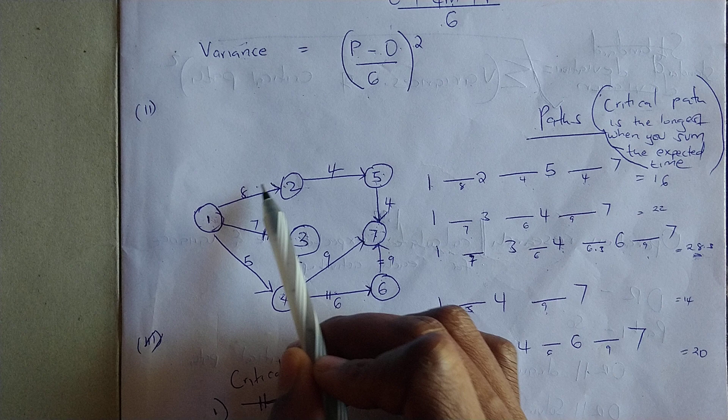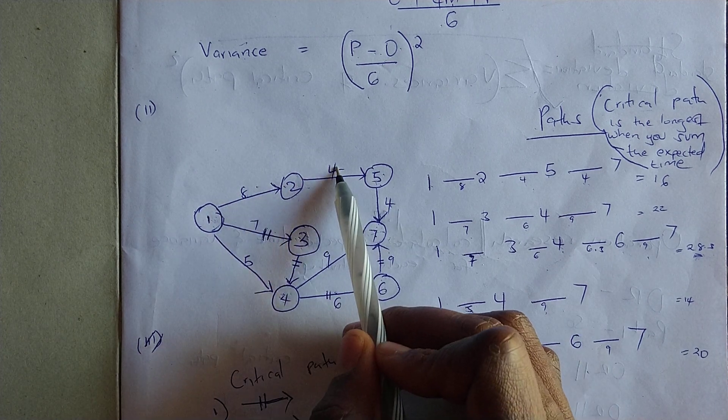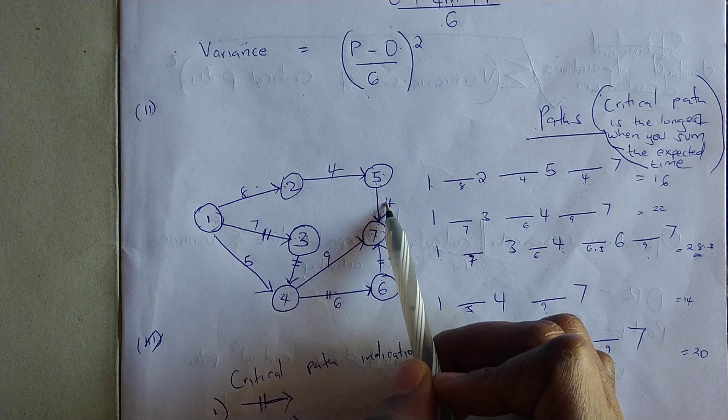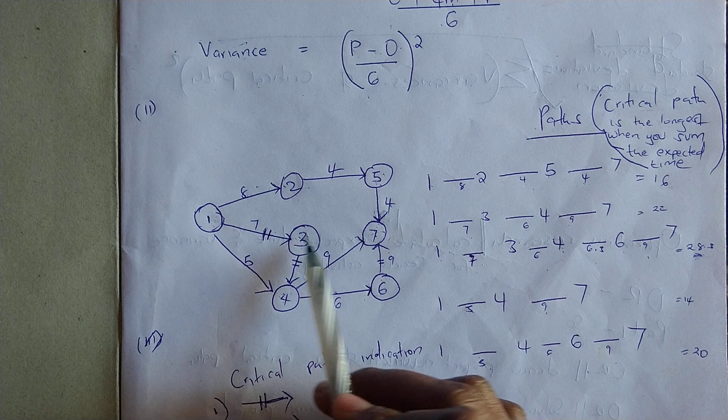How do you sum it? We'll use the expected time. For example, this path: one plus eight plus four plus four. It will give you a total of 16.